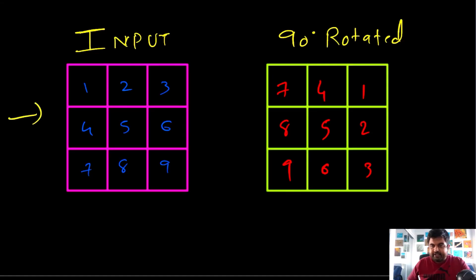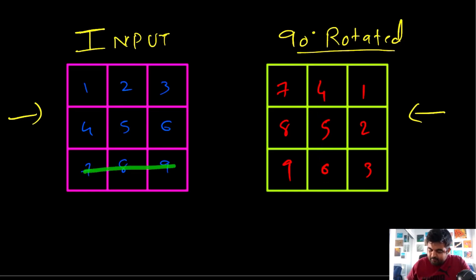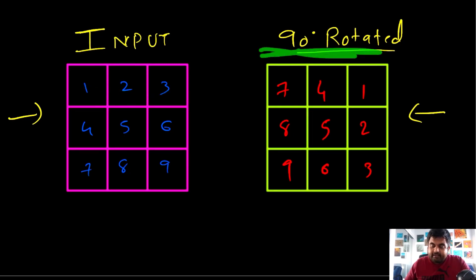Suppose this is the input matrix — this would be the answer for the 90-degree rotated matrix. Notice a couple of interesting things: over here, the value 1, 2, 3 is in a row, but over here, 1, 2, 3 is in a column. Similarly, 4, 5, 6 is a row that becomes a column, and same for 7, 8, 9. This is clearly a pattern. What we can do is convert all the values inside the rows to be inside the columns, and then reverse those rows — and we would get a 90-degree rotated array.